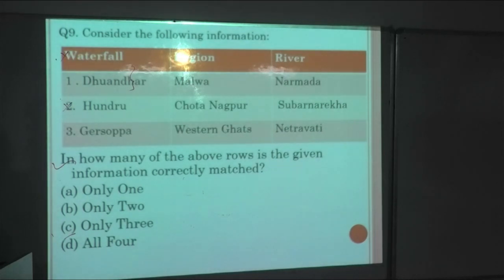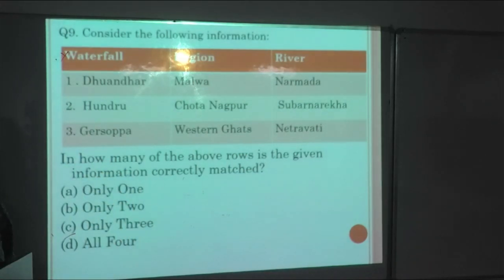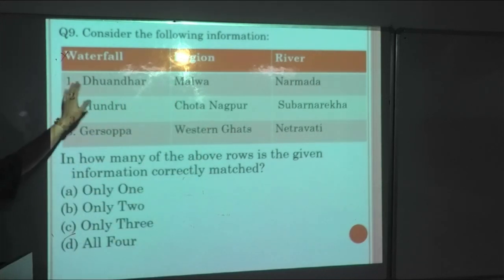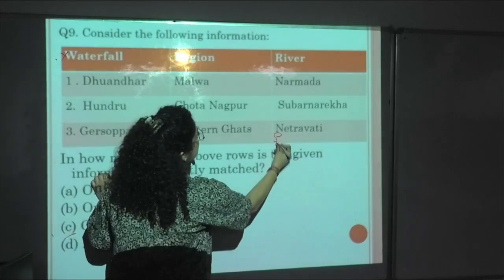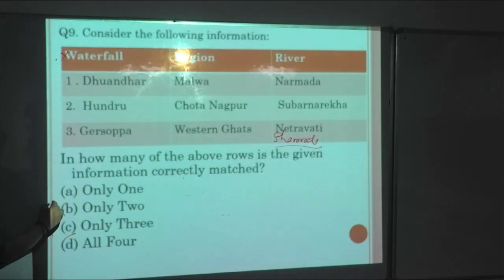Next question: Consider the following information. Those who read NCERT, it's directly there about Jog Falls and on which river it is. Each line of the NCERT is important. So which region and river is correct? Those who read NCERT - Malwa region is correct. Chota Nagpur, Subarnarekha - yes correct. If you read NCERT, this statement also, you will be able to eliminate the other option. Jog Falls is on western ghats, on Netravati river. It's not on this river, it's on that river. According to this, only two pairs will be correct. Jog Falls is also known as that Jog Falls.